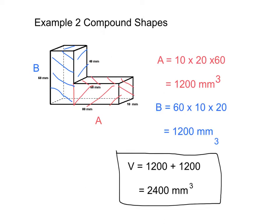The final volume is found by adding the two volumes for shape A and shape B. Again, don't forget your units. In this case, millimetres cubed.